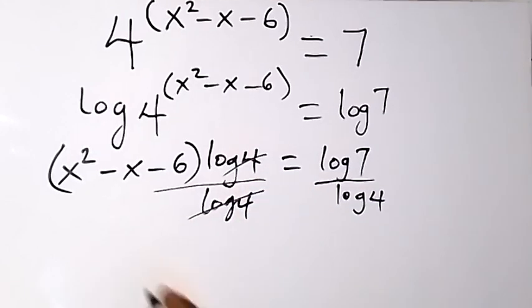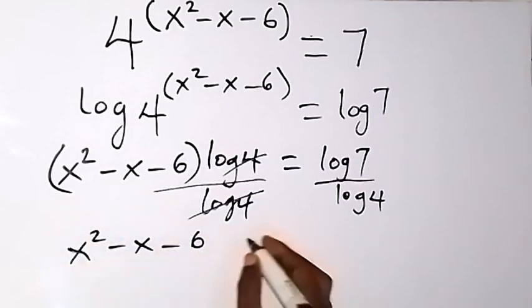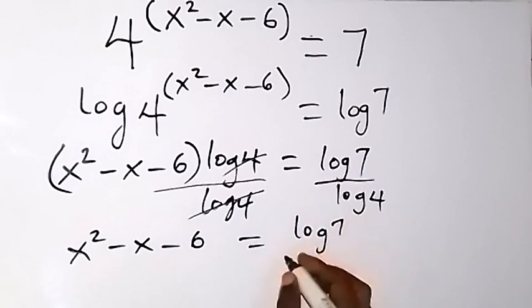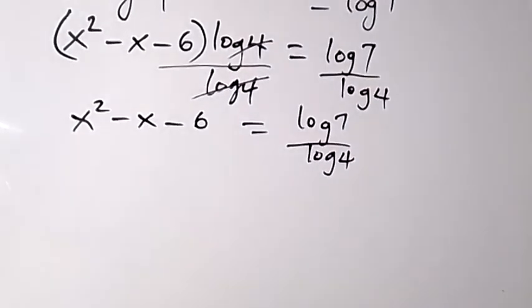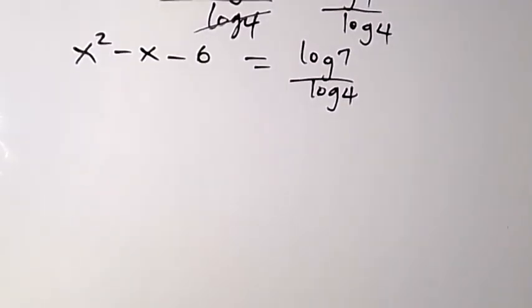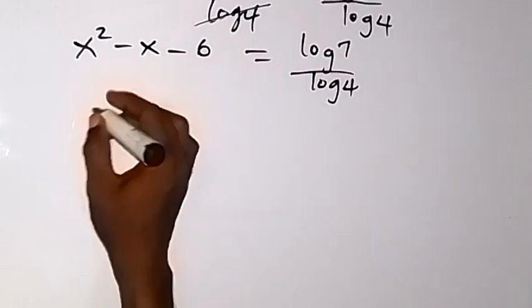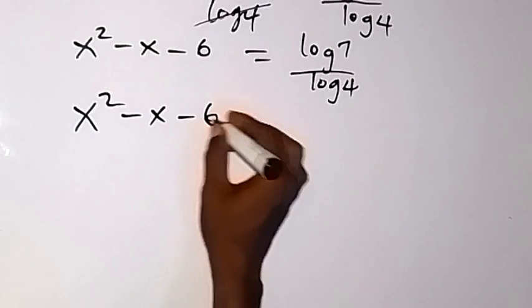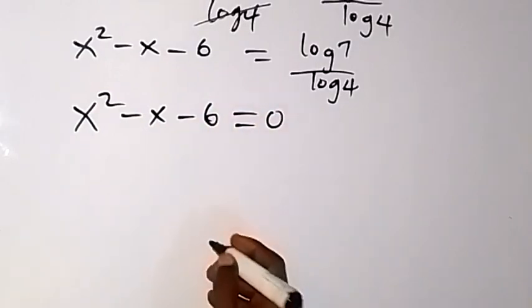What we have left will now be x squared minus x minus 6, equals to log 7 over log 4. From there, let's solve what we have on the left-hand side. So x squared minus x minus 6 equals 0, and we want to use completing the square here.